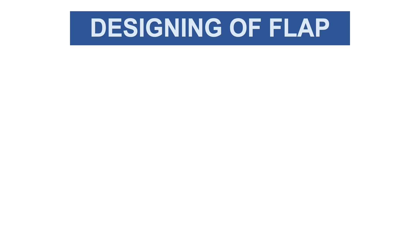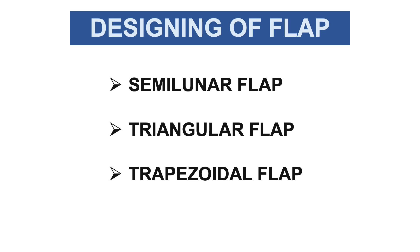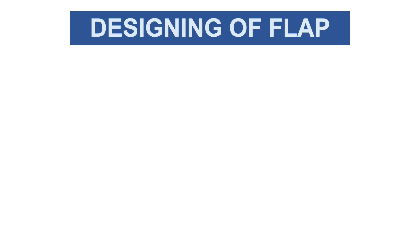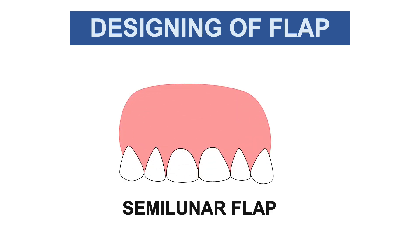For the first step — designing the flap — there are three types of flaps used in apicectomy: semilunar, triangular, and trapezoidal. Which flap to use depends on the position of the tooth and the extent of the periapical lesion. The semilunar flap is used when performing surgery on a limited area and when infection is associated with a single tooth.